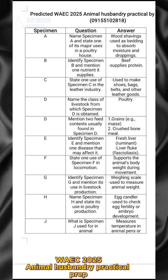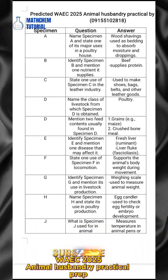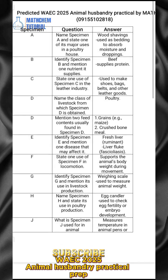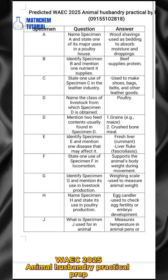Look at specimen A. The question is: name specimen A. The answer is wood shavings. The question also states: mention one of its major uses in a poultry house. The answer is: it is used as bedding to absorb moisture and droppings.